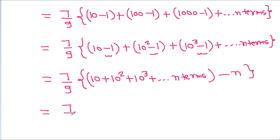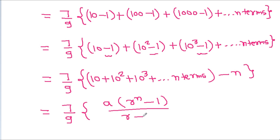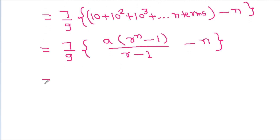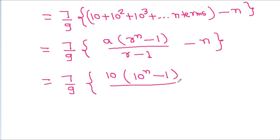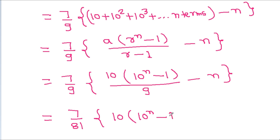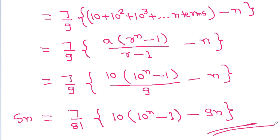And the sum of a GP is a times (r^n minus 1) divided by (r minus 1). Applying this, we get 7 by 81 times 10 into (10^n minus 1) minus n. So this is the value of Sn.